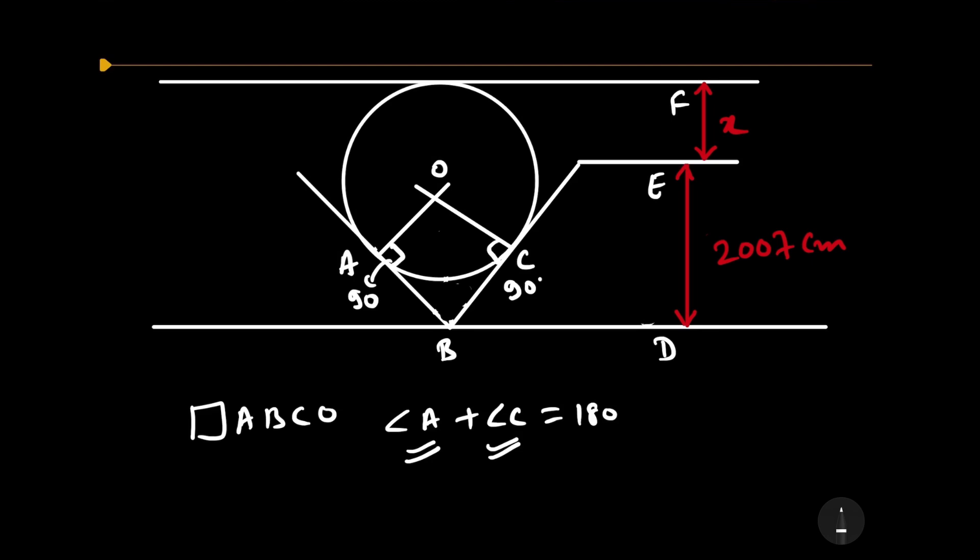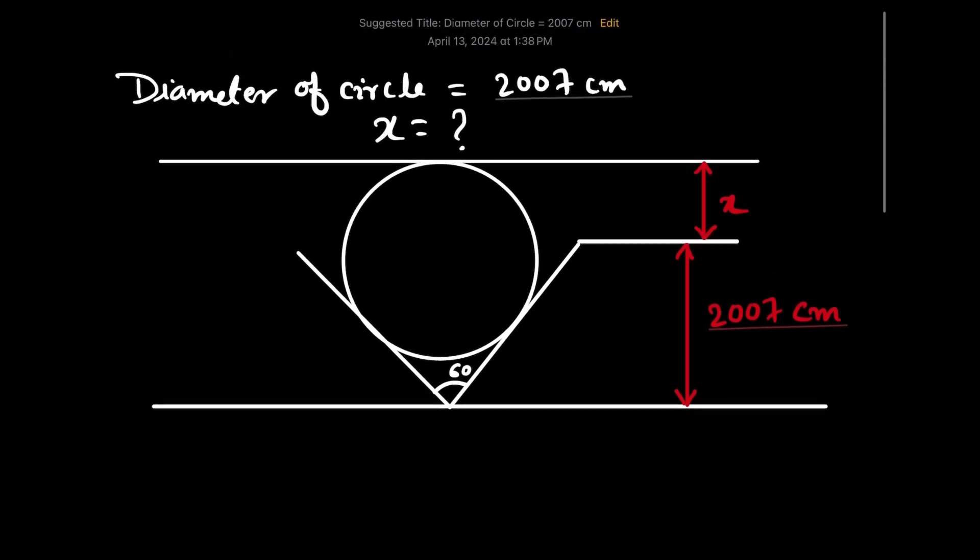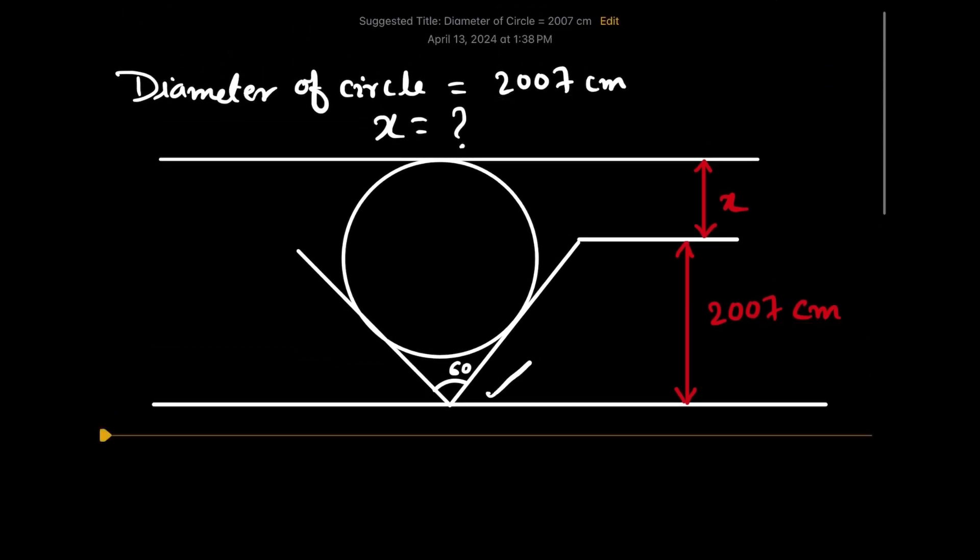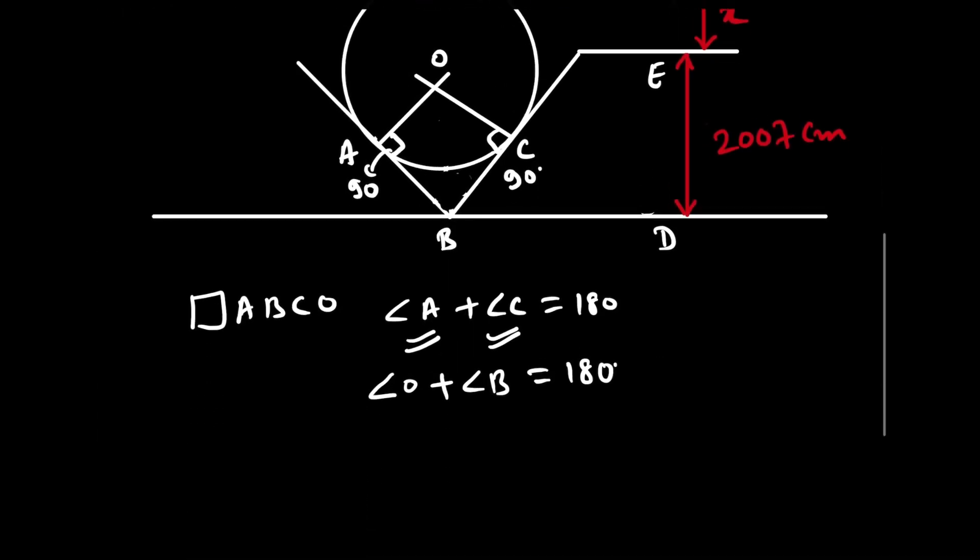It means angle O plus angle B must also equal 180 degrees. In the diagram, it is given that angle B is 60 degrees. Therefore, if we put the value of angle B as 60, then we can find the value of angle O. Angle O will be equal to 180 degrees minus 60 degrees, which equals 120 degrees.